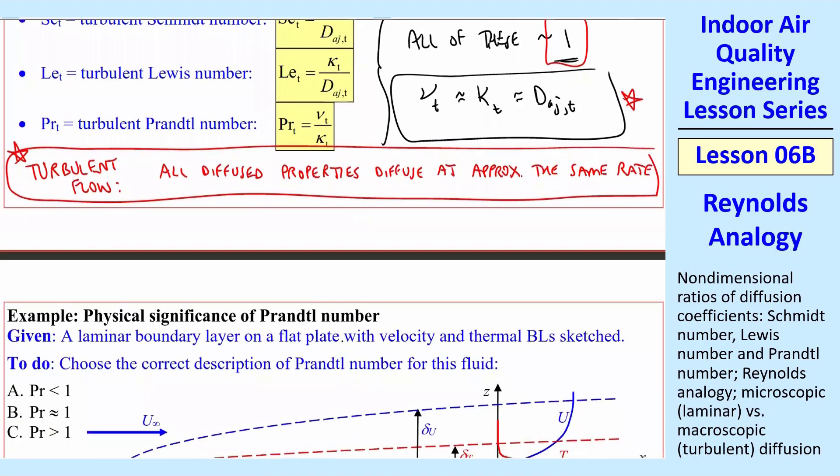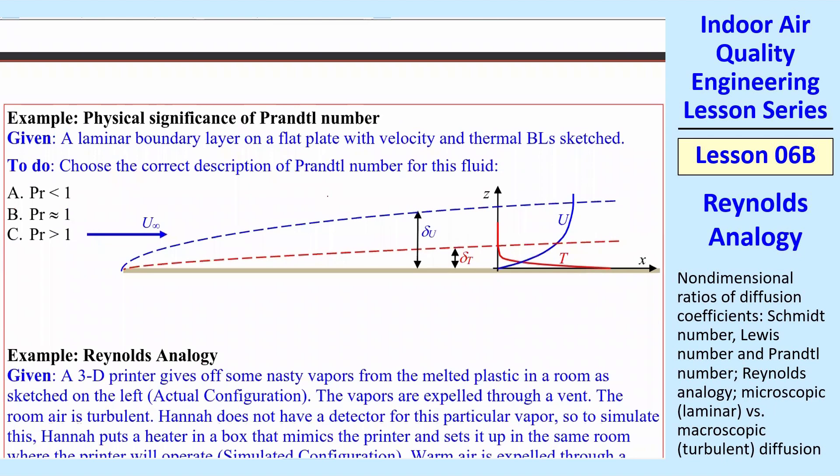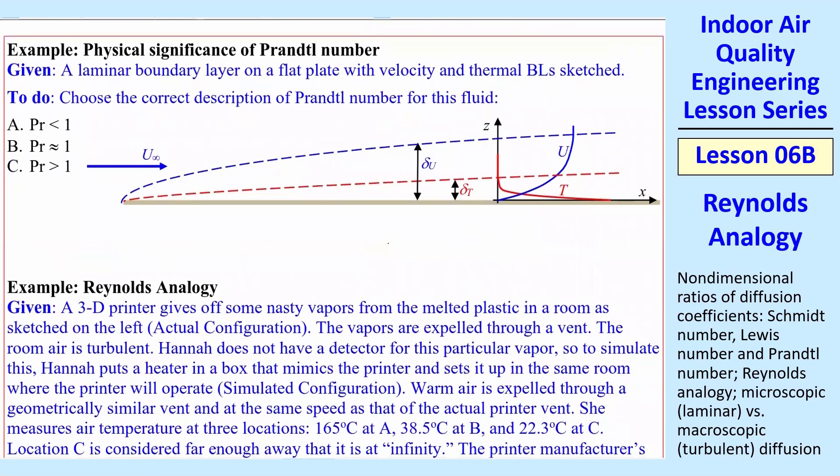We're talking about turbulent flow here. So now I'm going to do two examples, one for laminar flow and one for turbulent flow. And for the laminar case, this is just a qualitative question. We have a laminar boundary layer on a flat plate with a velocity boundary layer and a thermal boundary layer as sketched. So this is the velocity boundary layer, u goes from zero up to u infinity. And then this plate is hot, so T goes from some high temperature to some temperature. There's a thermal boundary layer of thickness delta T, and a velocity boundary layer of thickness delta U.